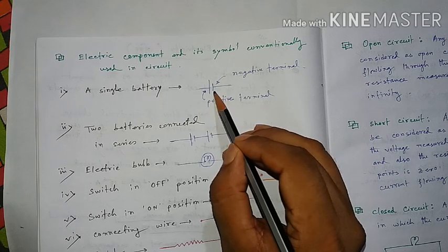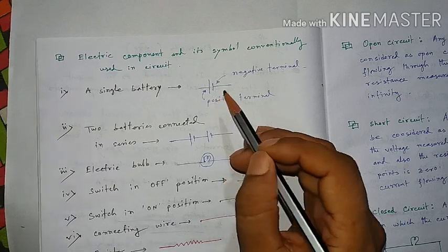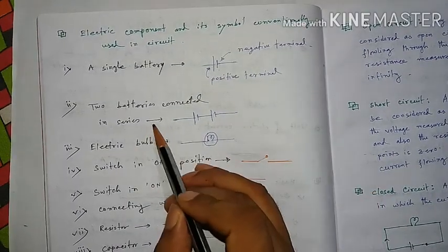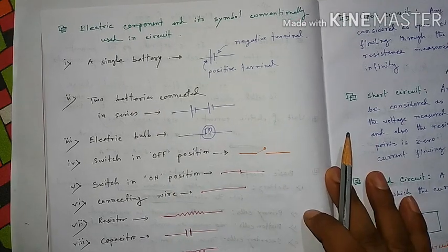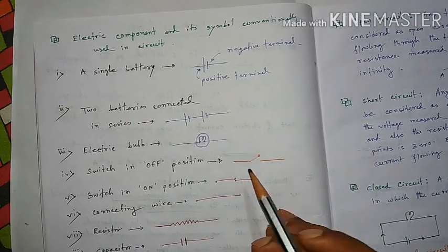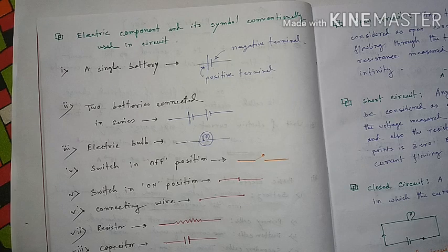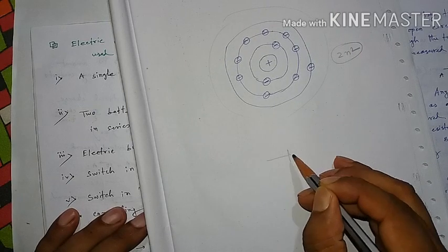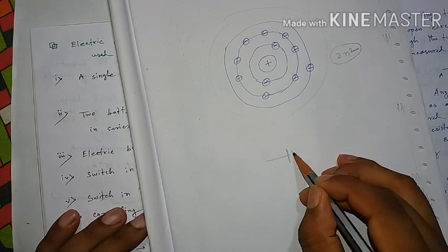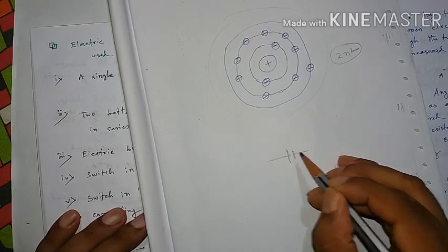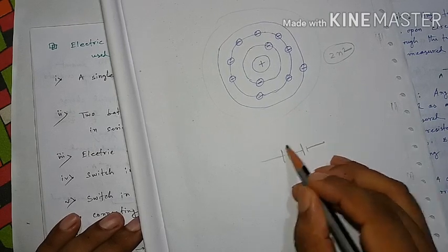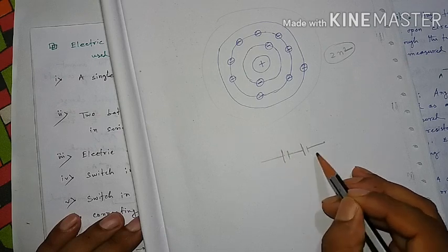The second line stands for the negative terminal. When two batteries are connected in series with the same battery type, the combined battery is connected to provide the same power.